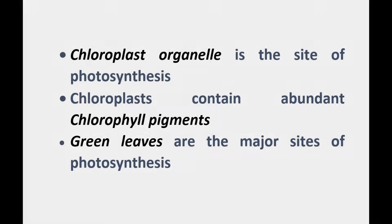Photosynthesis takes place inside cellular organelles called chloroplasts, which contain abundant photosynthetic pigments called chlorophyll. Chloroplasts are found in abundance in green leaves and are therefore the major site of photosynthesis in plants.